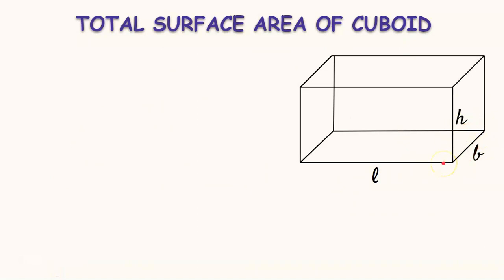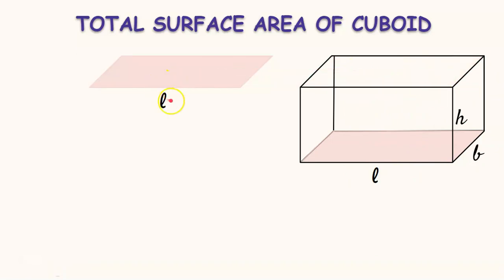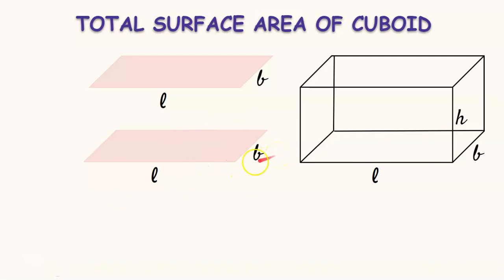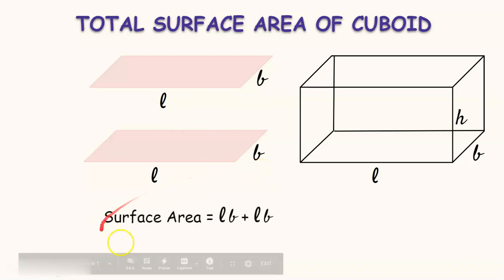First let us find the areas of the top face and bottom face. As they are both opposite to each other, their dimensions are also the same. The top face has dimensions L and B, and the bottom face also has dimensions L and B. As we know, the area of a rectangle is length into breadth, so the area of the top face is L×B and the area of the bottom face is also L×B. Therefore, by adding the two areas, we get LB + LB.